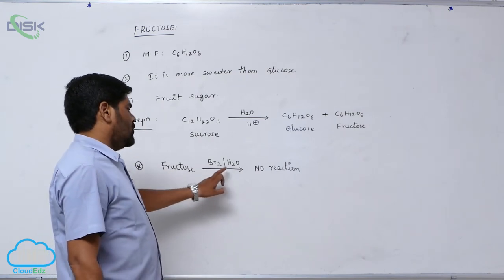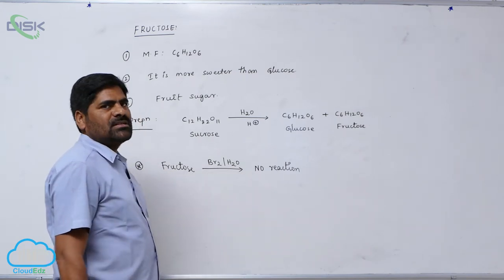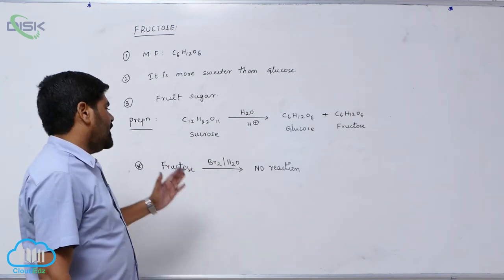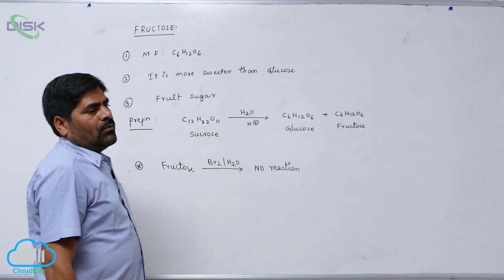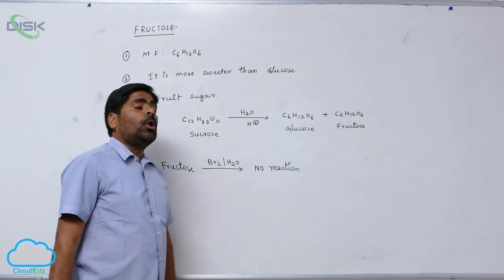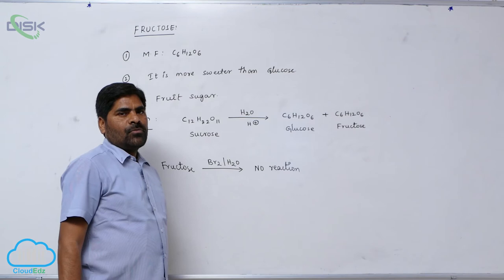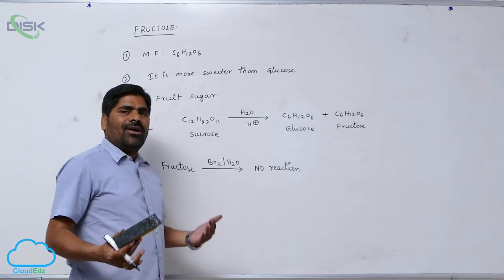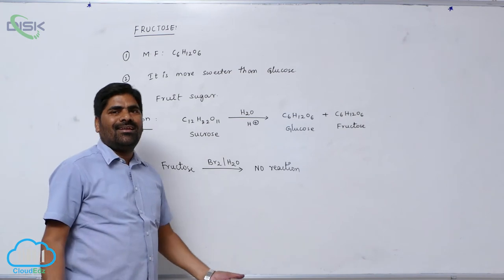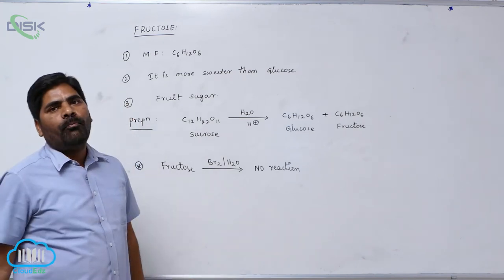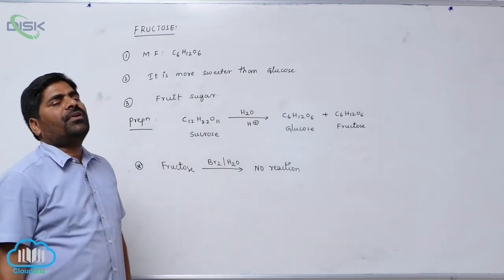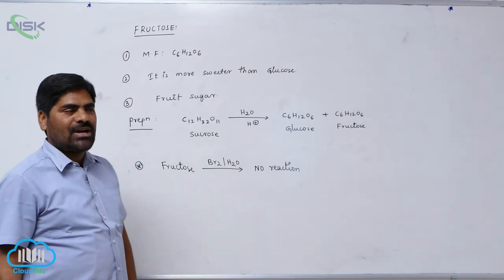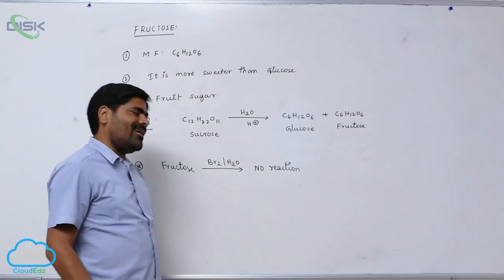Fructose does not react with bromine water, which indicates fructose contains a carbonyl group but it is not an aldehyde. So compulsorily it must be a keto group. The evidence of the keto group is determined by using concentrated nitric acid.